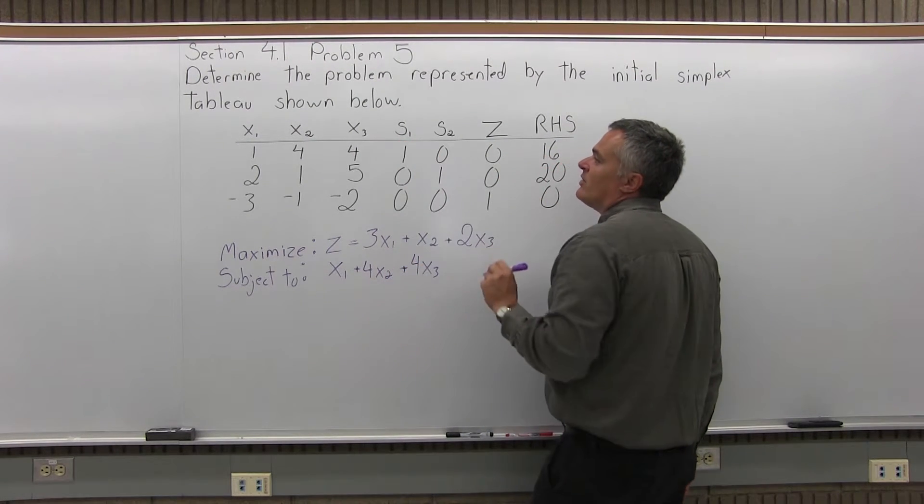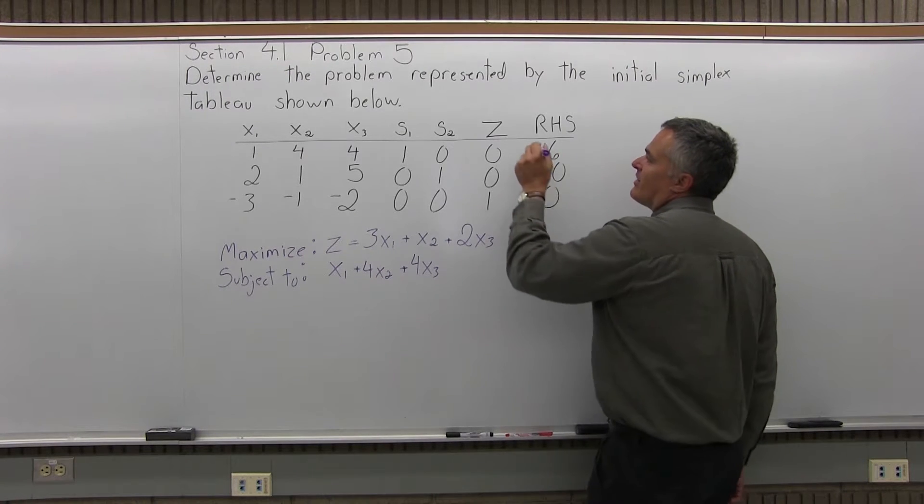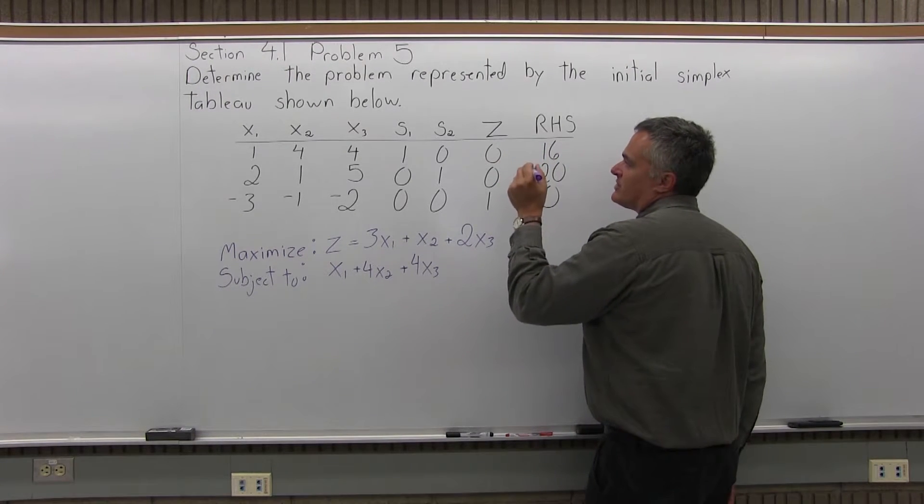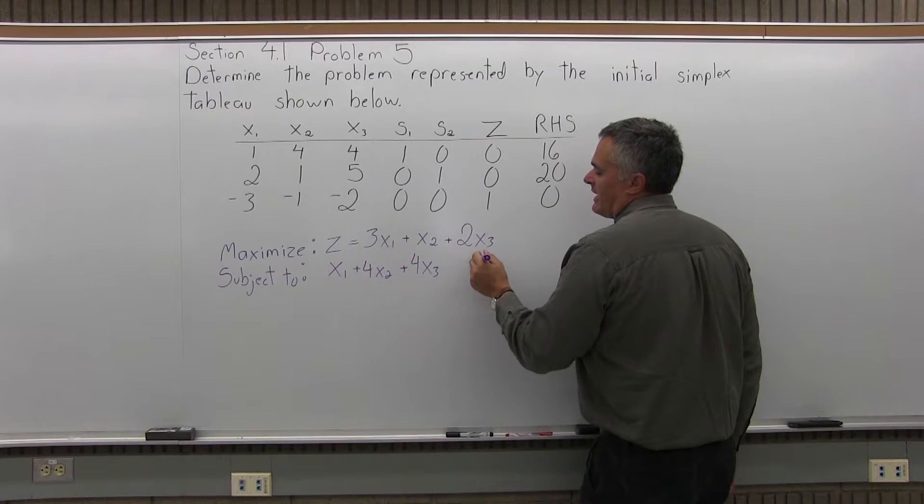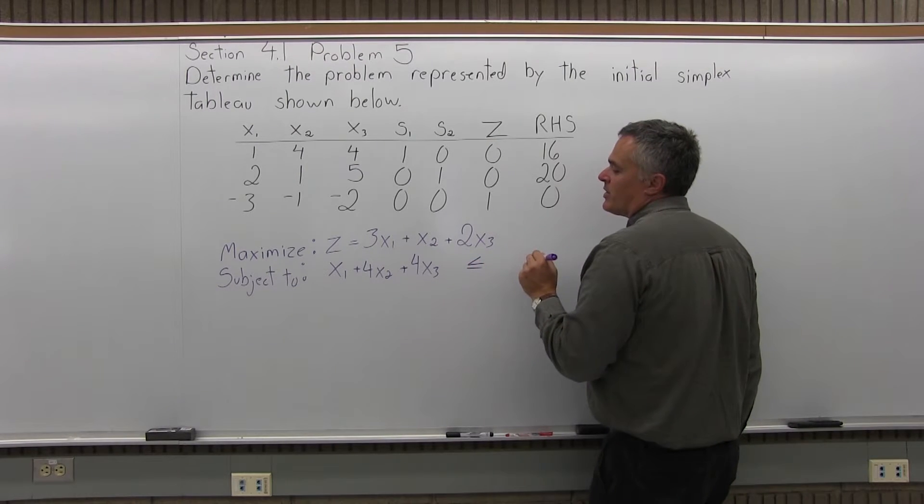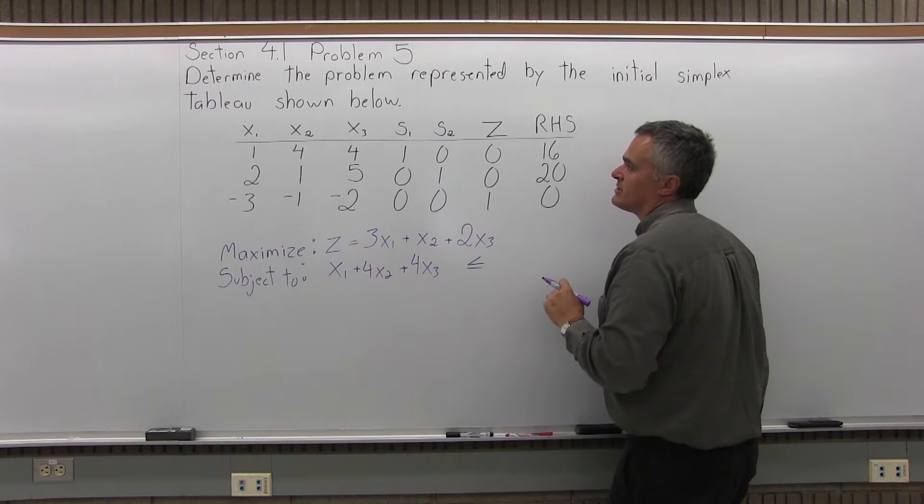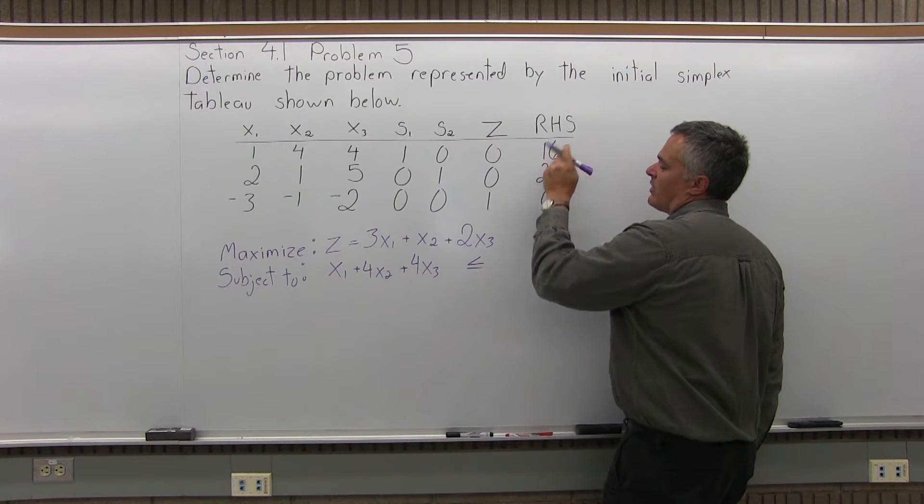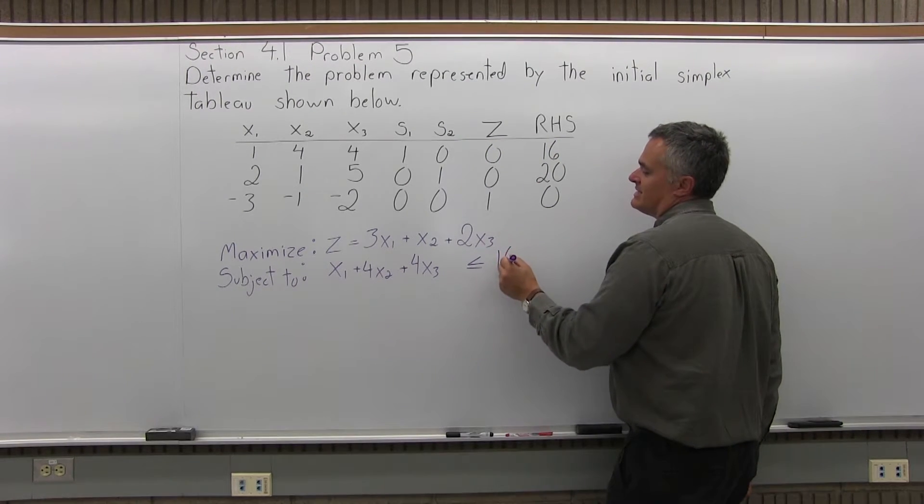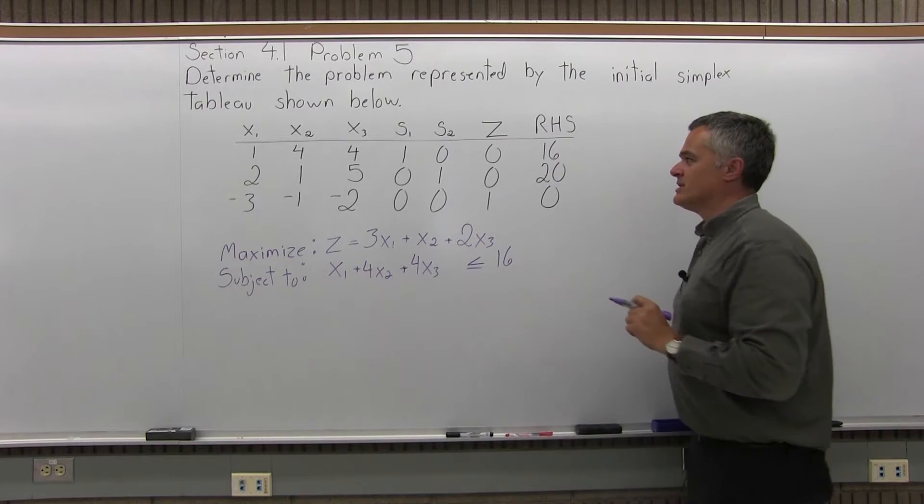The 1 in the S1, I don't need to write, because in the matrix, that top row is representing an equation, but in the original problem, it would have been a less than or equal to. That's where the 1 in the S1 column of my initial simplex tableau comes from. And what it's less than or equal to is the 16 in that last RHS column.